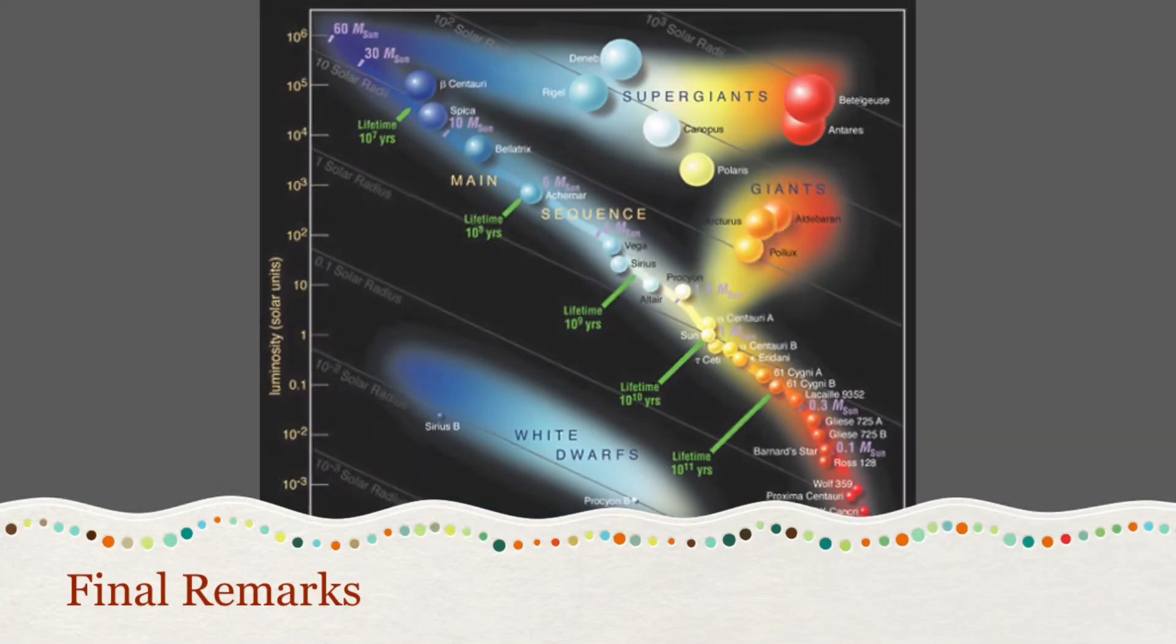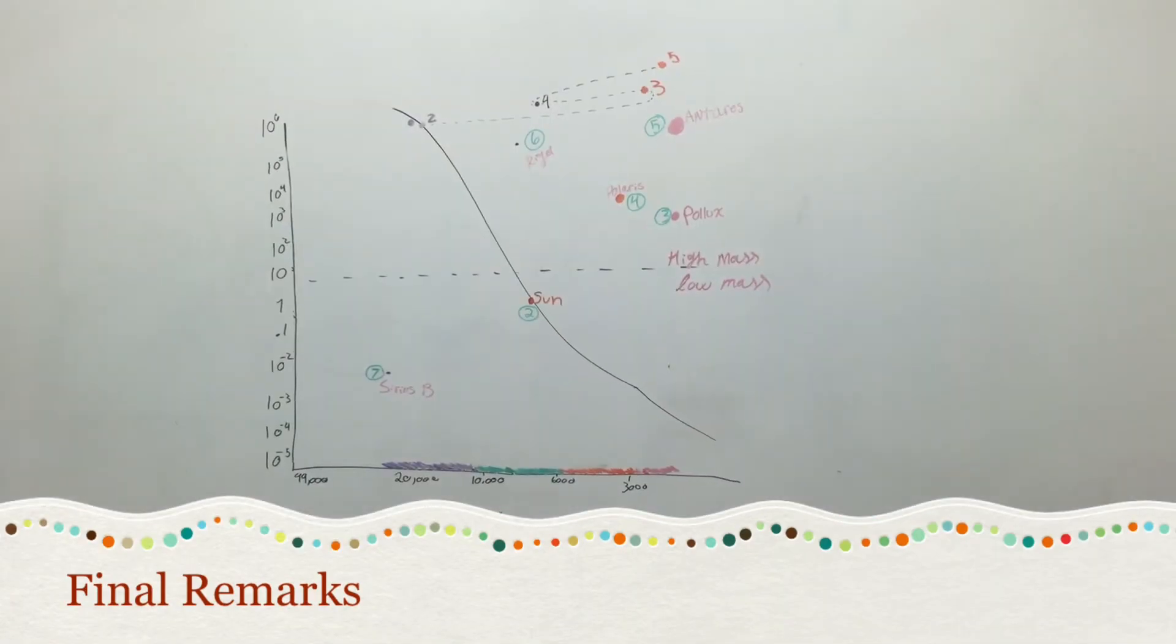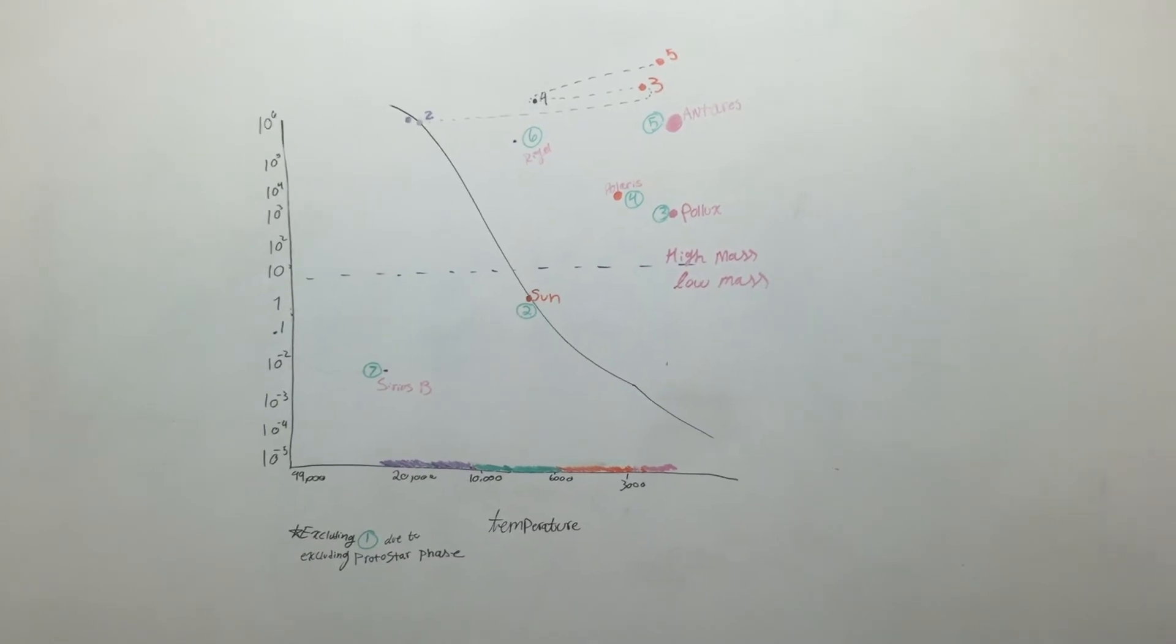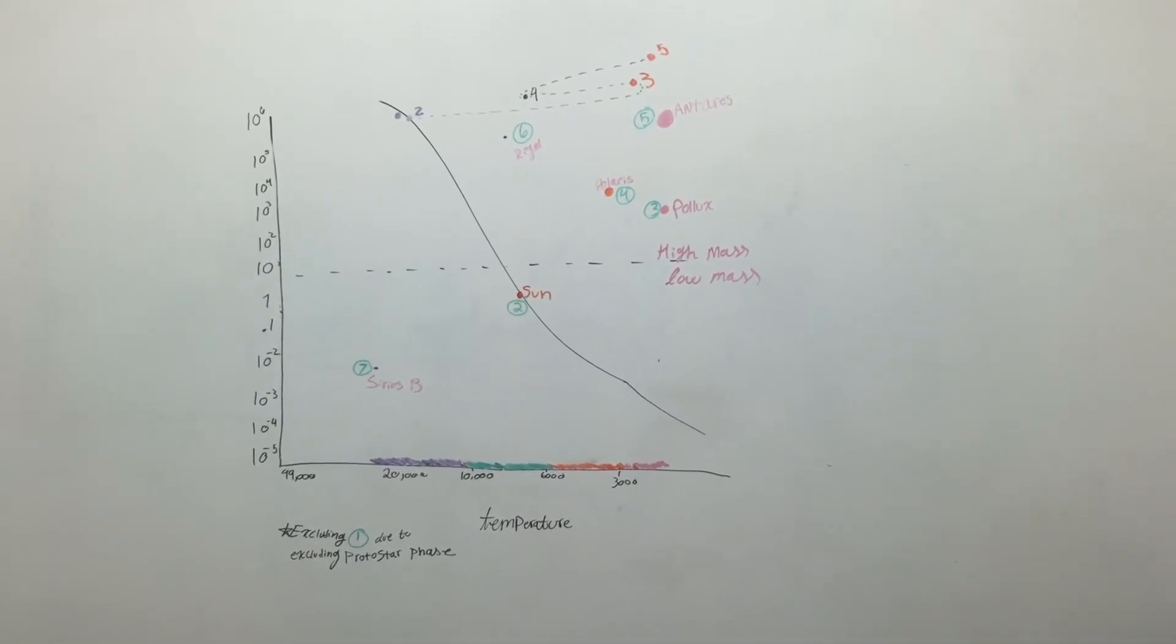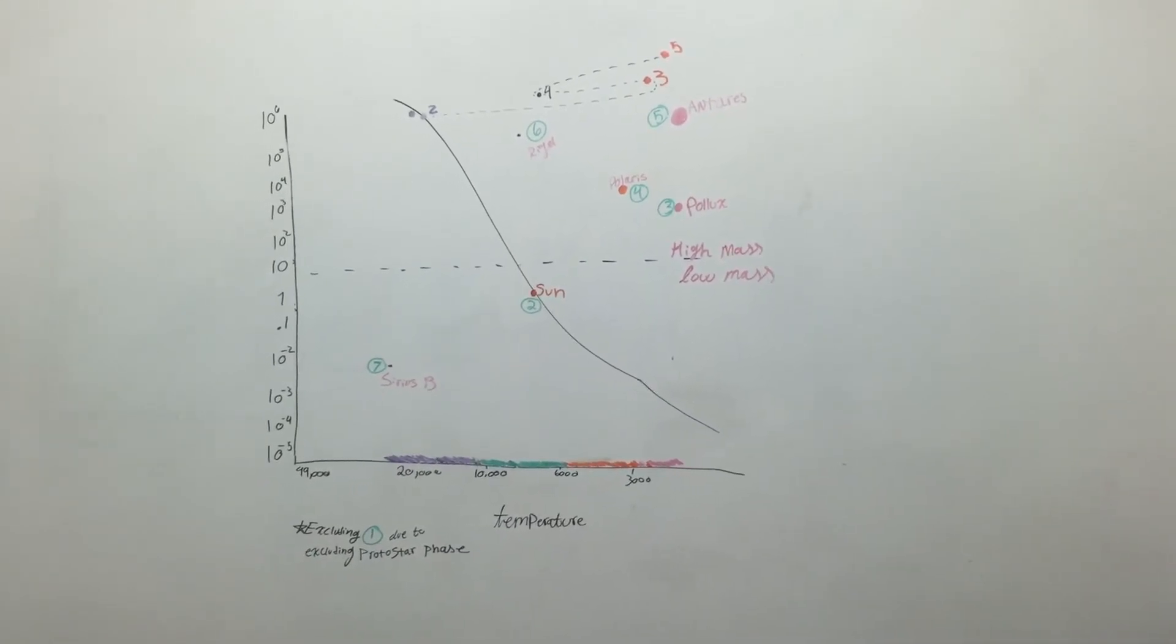Hello, Robert here. As depicted by my teammates, the HR diagram can help scientists and amateur astronomers understand the life cycle of almost any star in the night sky.